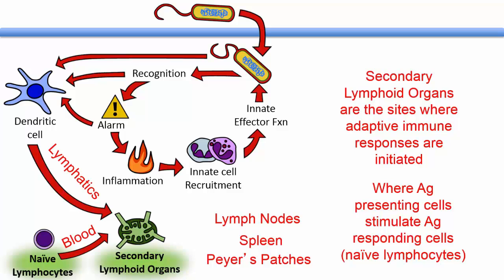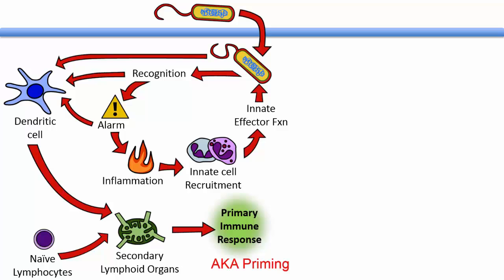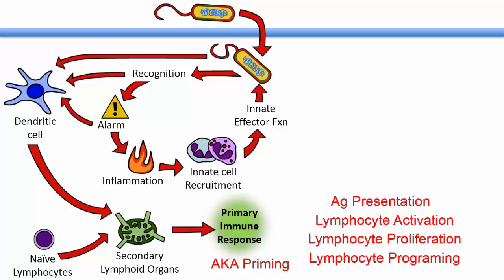The responding cells are naive lymphocytes that arrive from the blood, including naive T cells and naive B cells. If a naive lymphocyte finds its cognate antigen, this initiates a primary or first adaptive immune response against this antigen, also known as priming. Events associated with this include antigen presentation, lymphocyte activation, lymphocyte proliferation, and the programming of lymphocytes toward a particular type of immune response.